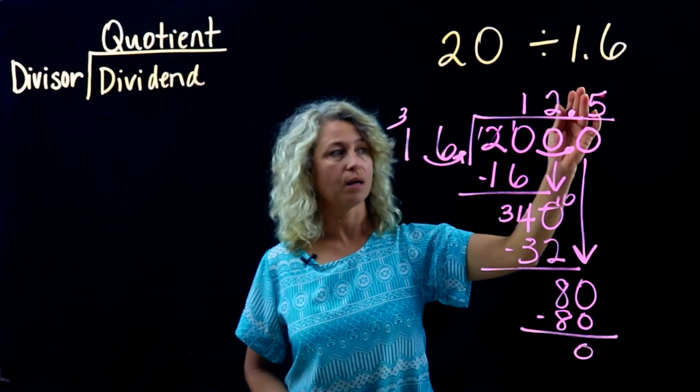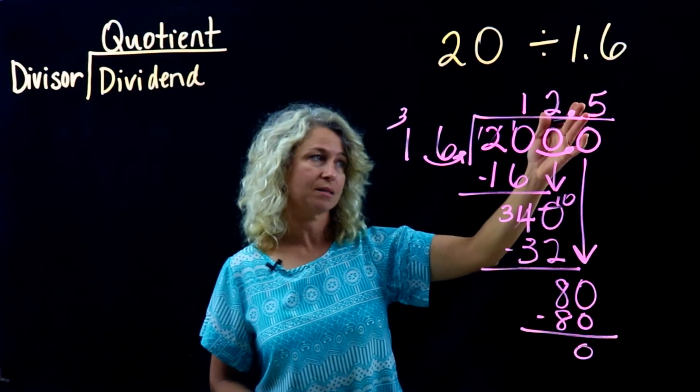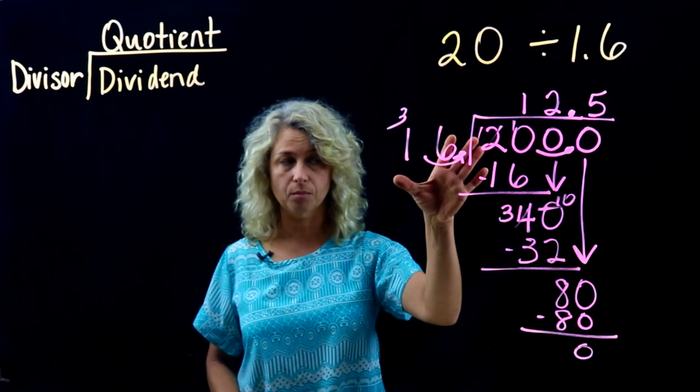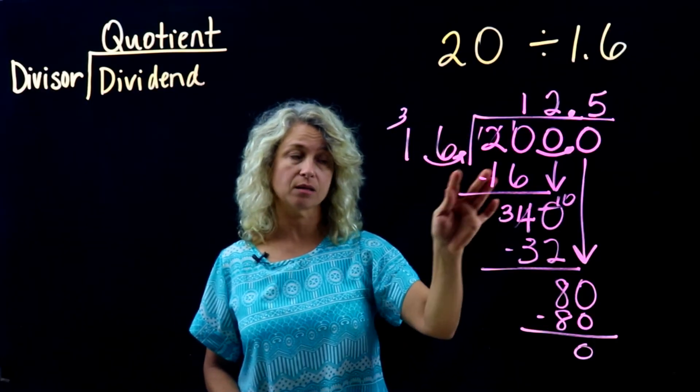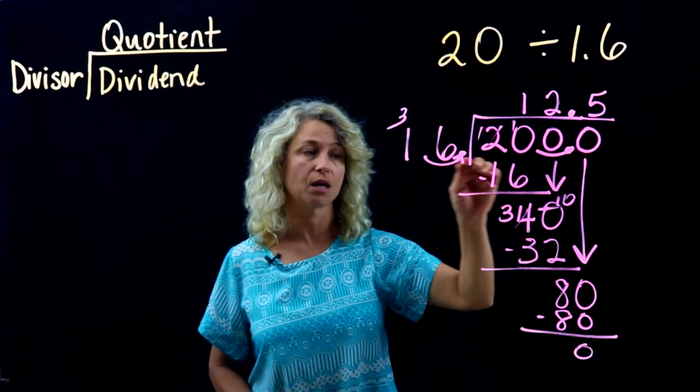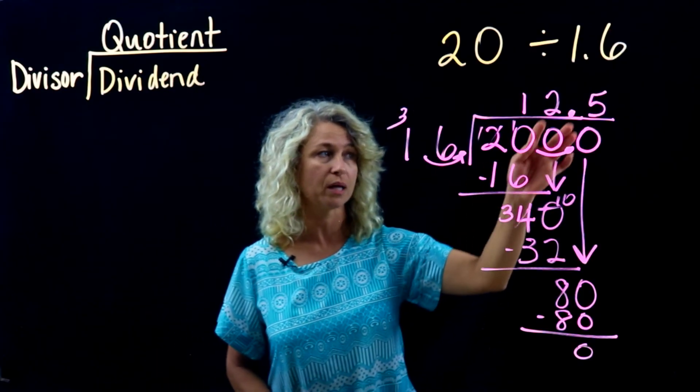Just a quick recap: remember the divisor must be a whole number. If it's not, move over and do the same thing to the dividend that you do to the divisor. Place your decimal straight up once you do that and you'll have it.